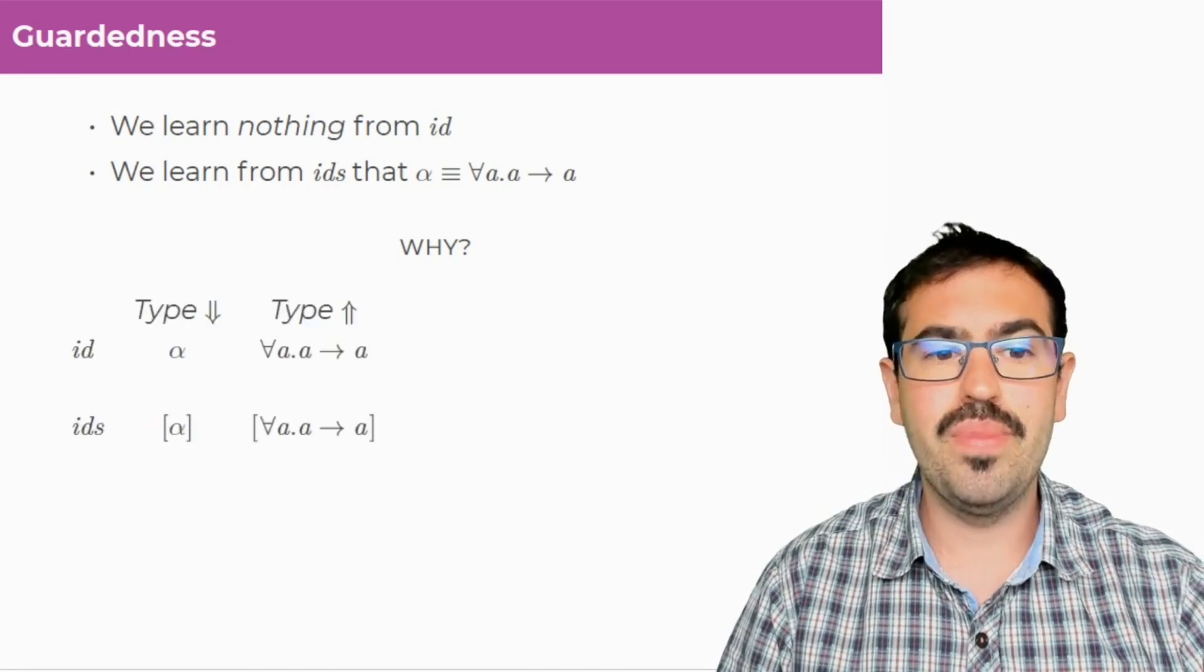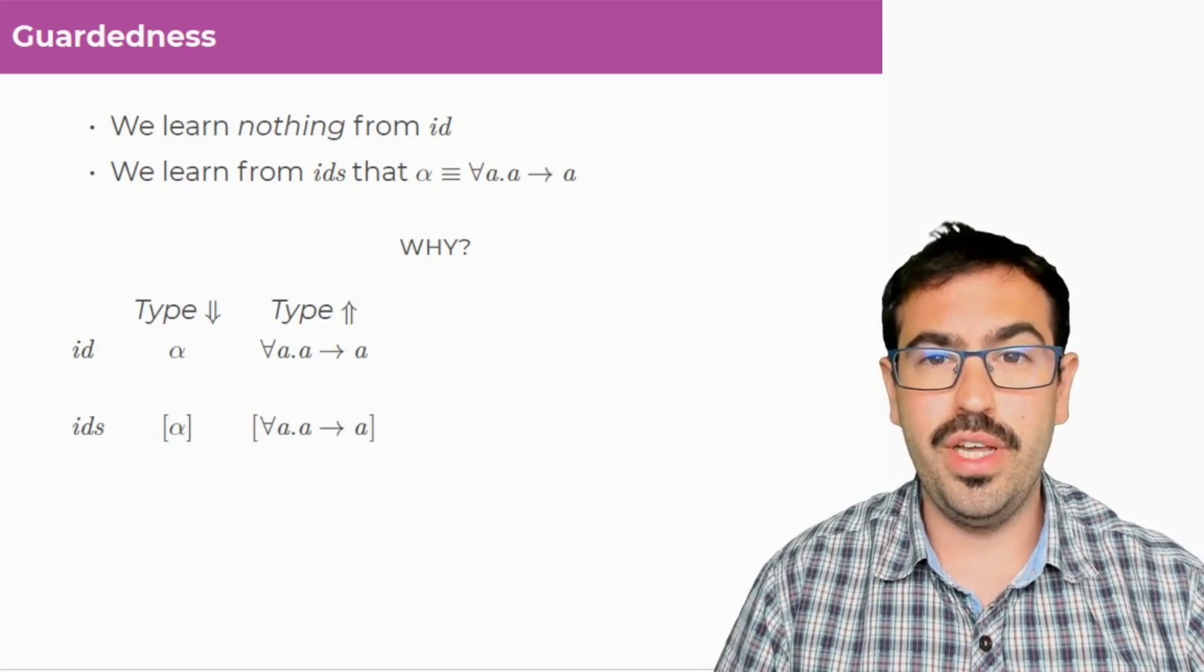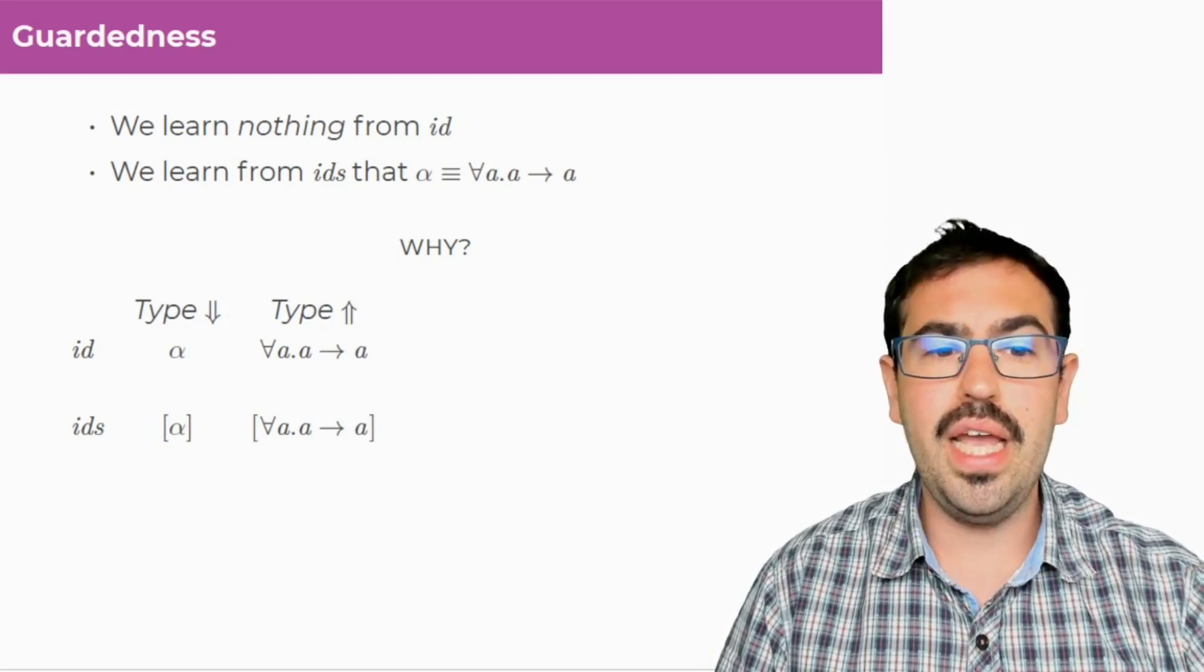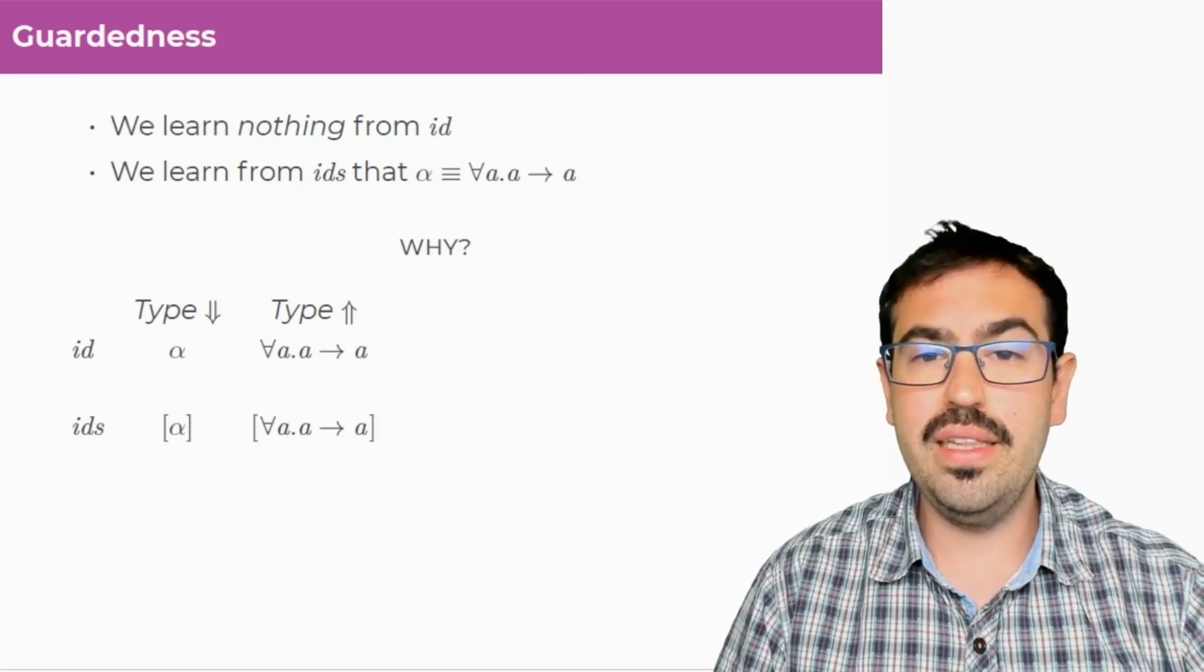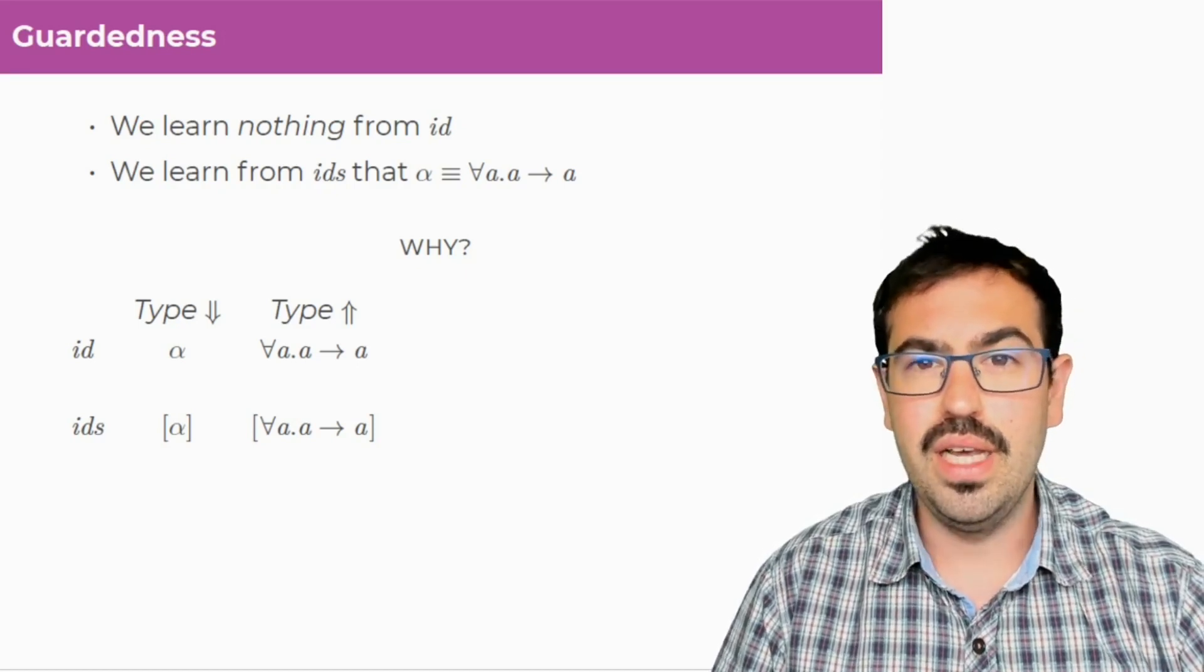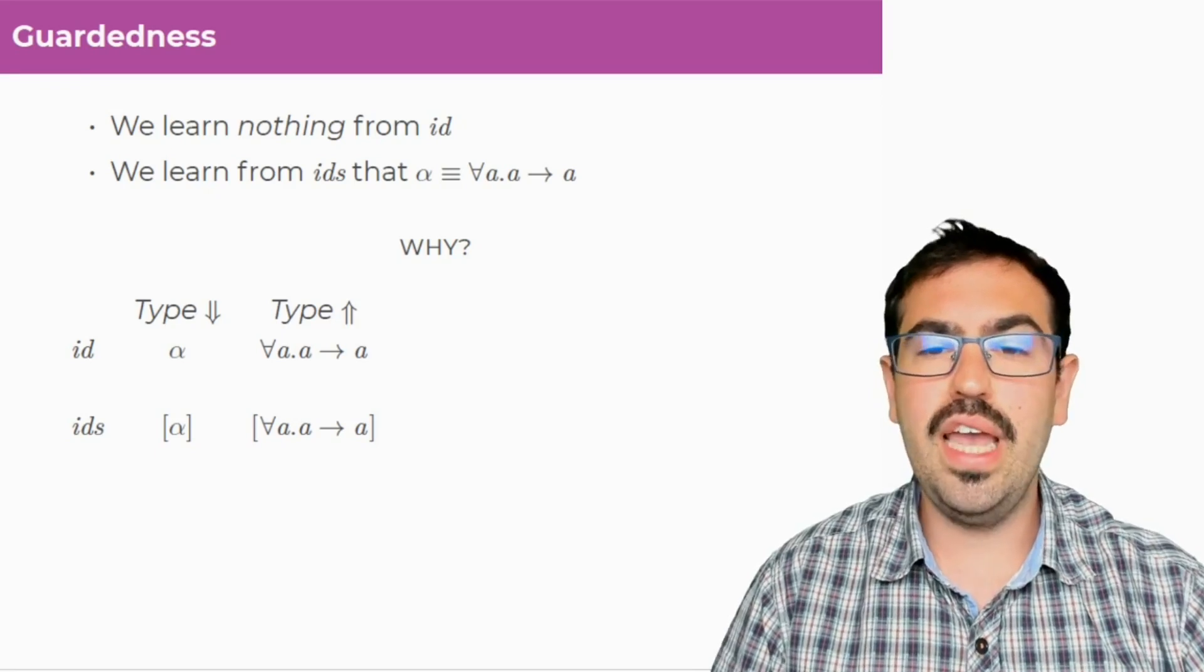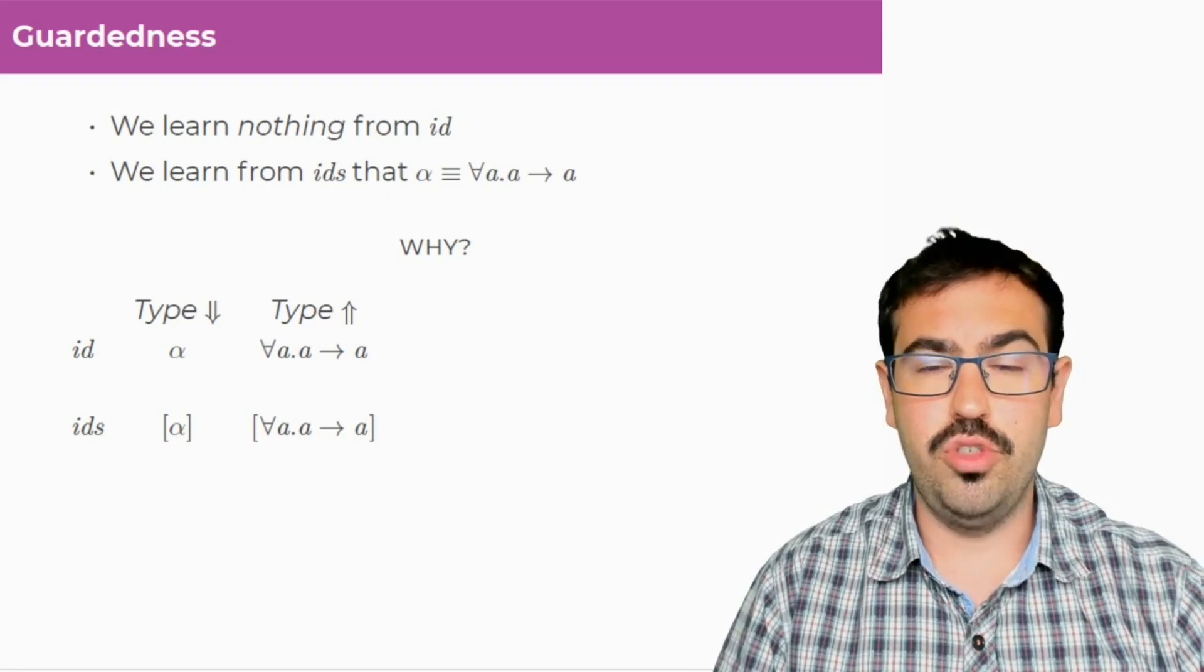Here are the types we are pushed, so the types we get from the instantiation and the types that are obtained from looking at the type of the variables. In the case of ID, the type which is pushed is this single type variable alpha, and the type we get from the variable is for all A dot A to A, and from IDs it's the same, but everything is wrapped in a list constructor.